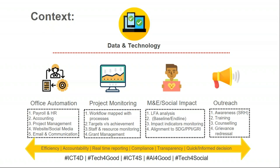Most of these technology needs we would bucket into one of four categories. The first is office automation — where we get requests to streamline internal back-office processes. Some examples are payroll, HRMS, accounting, project management; people would also ask us to revamp their website, social media channels, internal communication and email tools.